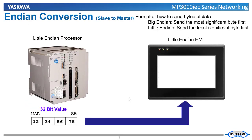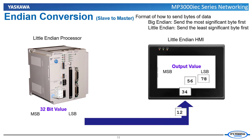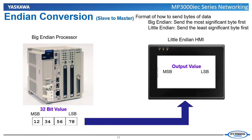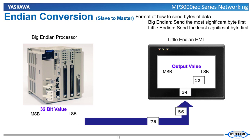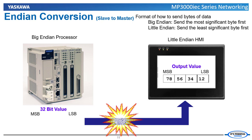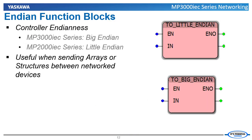Endian format deals with how information is sent between two devices. A little Endian processor sends the least significant byte first and ends with the most significant byte. In this case, the data being sent from one device needs to be manipulated so that it transmits correctly to the second device. There are two functions that can be used to perform this manipulation: the two little Endian and two big Endian type conversion functions. These functions are commonly needed when sending structures or arrays between devices.